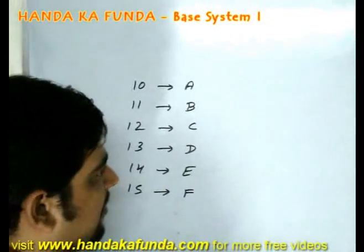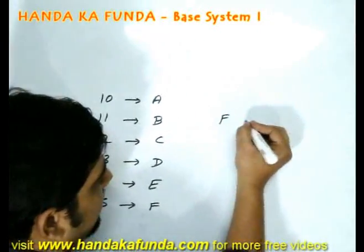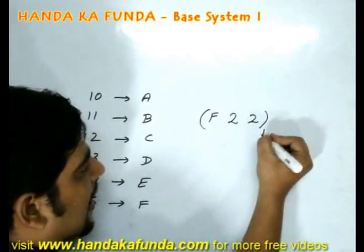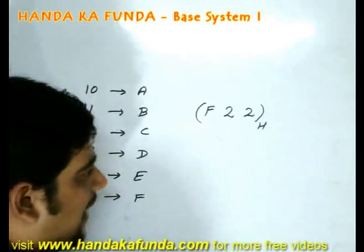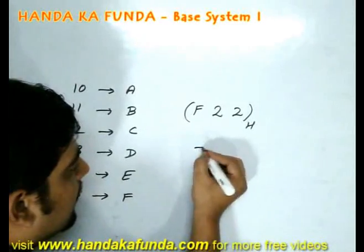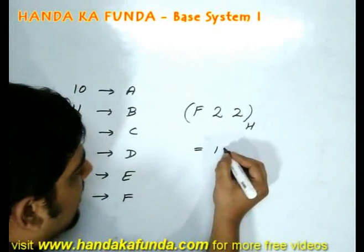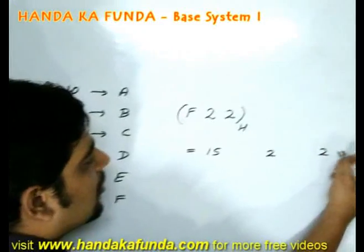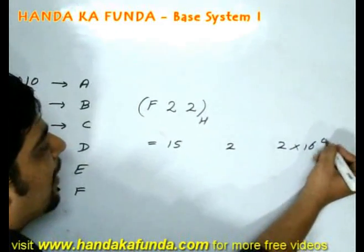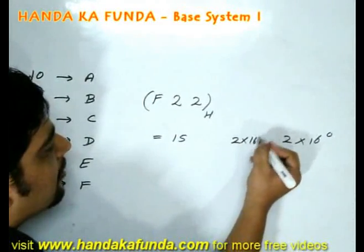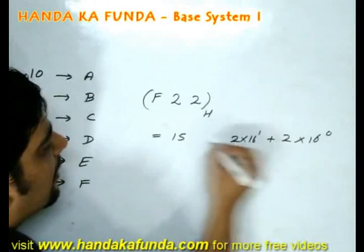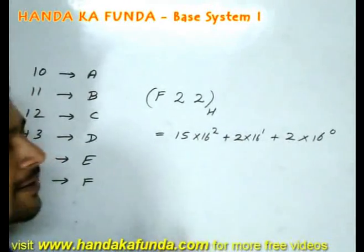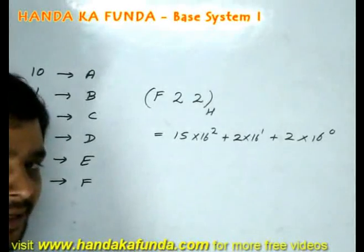Suppose I am given the number F22 in hexadecimal. What is its value in the decimal system? F represents 15. So we have 15 times 16 squared, plus 2 times 16 to the power 1, plus 2 times 16 to the power 0. Whatever this comes out to will be the answer in the decimal system.